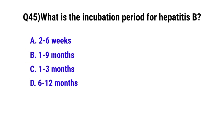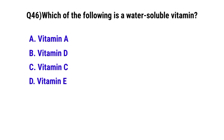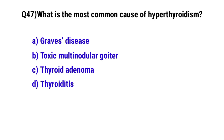Question number 45: What is the incubation period for hepatitis B? The correct option is C: 1 to 3 months. Question number 47: What is the common cause of hyperthyroidism? The correct option is A: Graves' disease.